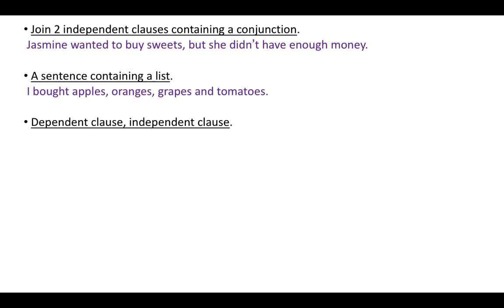An example of a comma used to separate a dependent clause and an independent clause: 'Because I missed the bus, I was late to school.' Remember, the dependent clause doesn't make sense on its own, whereas the independent clause does. 'Because I missed the bus' is the dependent clause. 'I was late to school' is the independent clause.